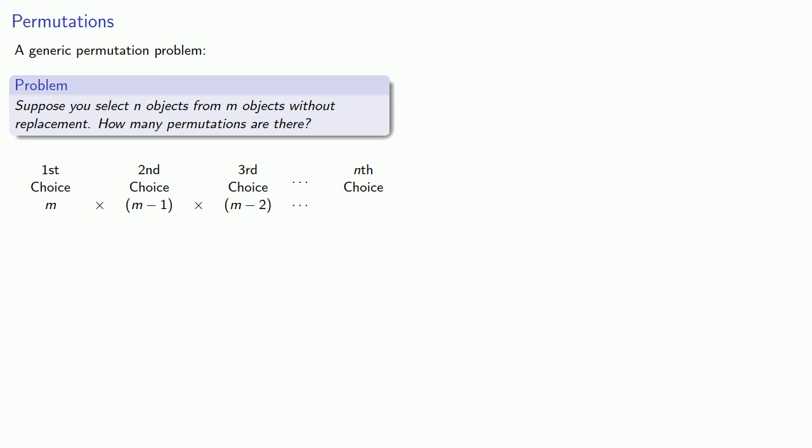And, for the most complicated part of the problem, for the nth choice, we have M minus N plus 1 choices. Here you might notice that adding the choice number and the number of choices always gives you M plus 1. And our fundamental counting principle says that we can find the number of permutations as the product M times M minus 1 times M minus 2 all the way down to M minus N plus 1.